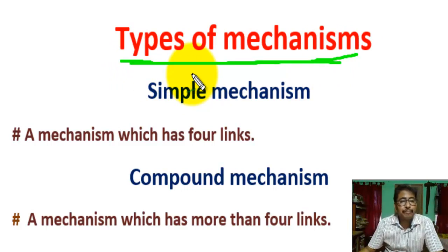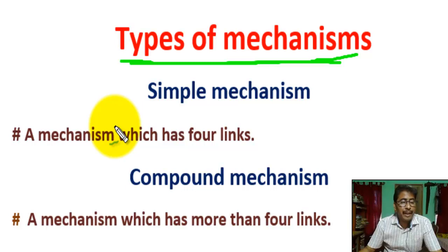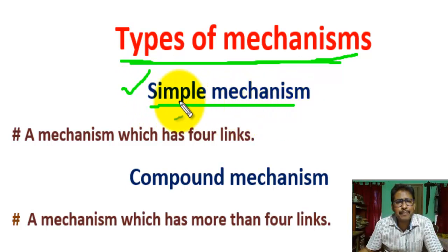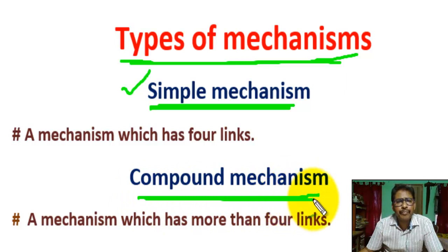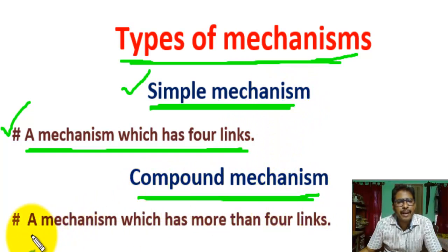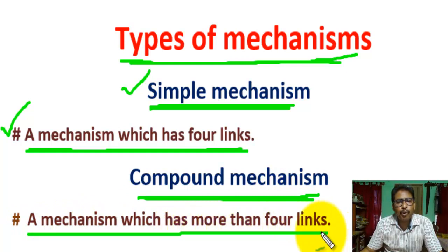For a mechanism, a minimum of four links are required. A three-link chain is a structural frame, not a mechanism. Mechanisms are of two types: simple mechanism and compound mechanism. A simple mechanism has four links. A compound mechanism has more than four links.